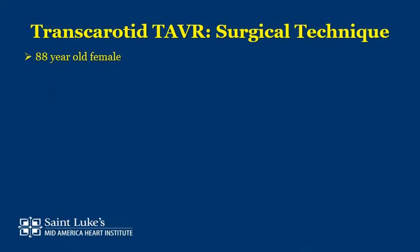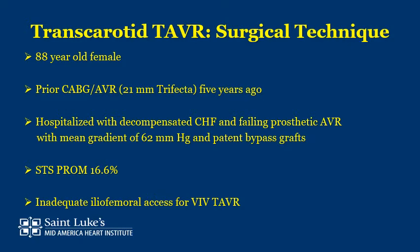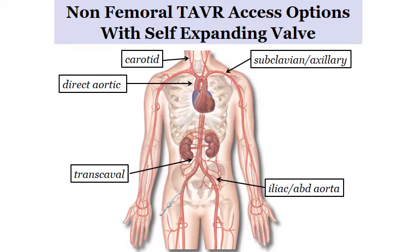Our technique will be illustrated in an 88-year-old female who had a prior CABG/AVR five years ago with a 21-millimeter Trifecta. She was currently hospitalized with decompensated congestive heart failure and a failing prosthetic aortic valve with a mean gradient of 62 and patent bypass grafts. Her STS score was 16.6%, and unfortunately, she had inadequate iliofemoral access for valve-in-valve TAVR.